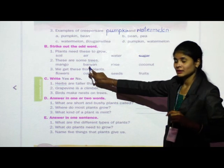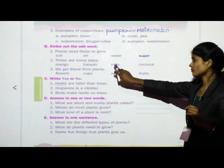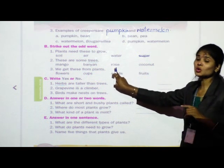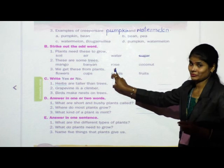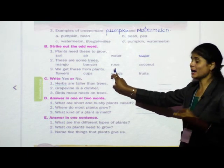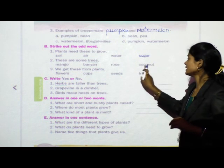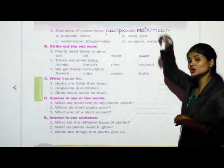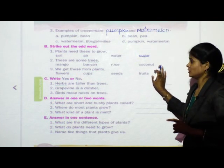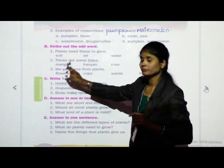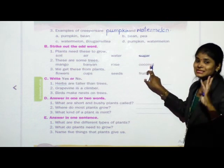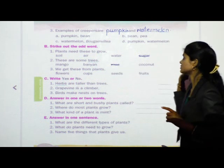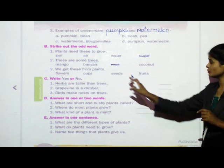Banyan is also a tree. Rose — is rose a tree? No, rose is not a tree because it is a short-sized plant. Coconut is also a tree because it grows very tall. So mango, banyan, and coconut are trees, but rose is not a tree. Strike out the word rose.